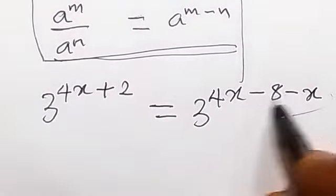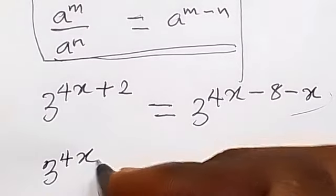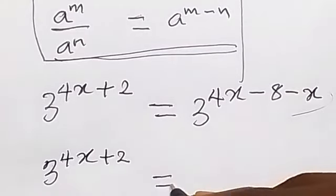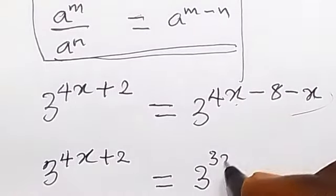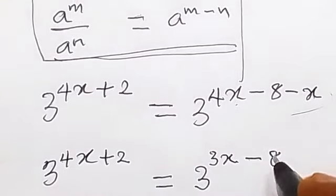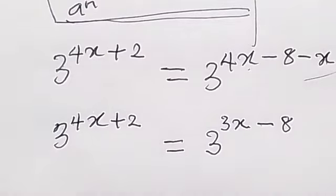Then from there we can solve this further. Let's bring this one simpler. We have 3 raised to power 4x plus 2, then equals to 3 raised to power 4x minus x plus 3x, then minus 8 there. So we then have the same base.